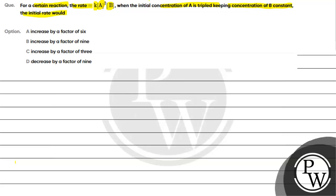Option A: increased by a factor of 6. Option B: increased by a factor of 9. Option C: increased by a factor of 3. Option D: decreased by a factor of 9.